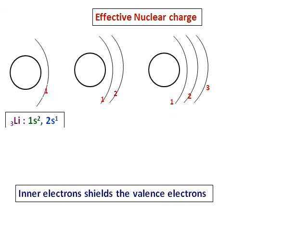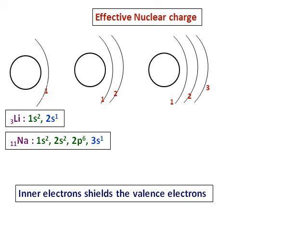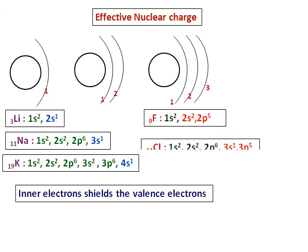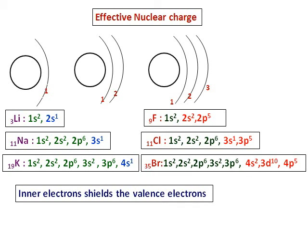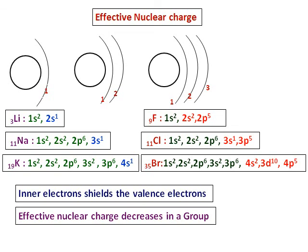Consider the elements lithium, sodium, and potassium — they belong to the same group. Similarly, fluorine, chlorine, and bromine also belong to the same group. From the electronic configurations, it is clear that the 4s electron of potassium is much farther from the nucleus than the 2s electron of lithium. Hence, potassium can lose its electron more easily. The same applies to fluorine, chlorine, and bromine — the 4p electron of bromine is farther than the 2p electron of fluorine. So, effective nuclear charge decreases in a group.